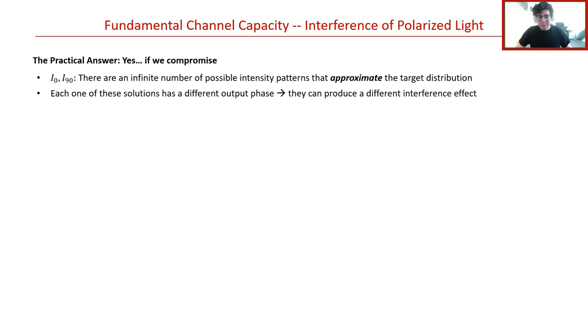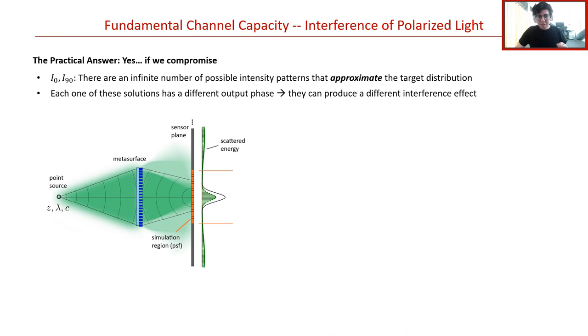The idea is that for each of I0 and I90, there are an infinite number of possible intensity patterns that approximate the target distribution that we want. Each one of these realized solutions also has a different output phase, which will produce a different interference effect. In other words, the task of designing a third channel is actually that of sampling from the space of possible intensity pairs on I0 and I90 and finding the one that minimizes the approximation error versus all three target distributions. One important subtlety is that when we compute the intensity at the sensor plane, we do so over a finite domain, which we call the simulation region. It is then possible to get different approximations in two qualitatively different ways. The first is that we might learn to scatter light outside the simulation region. For imaging tasks, we prefer solutions of the second type where the optic keeps all light focused in the simulation region. We do this during gradient descent by using a regularization term in our loss function that penalizes energy that's scattered outside of the calculation region.